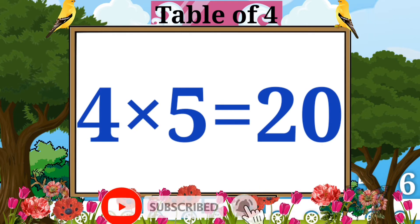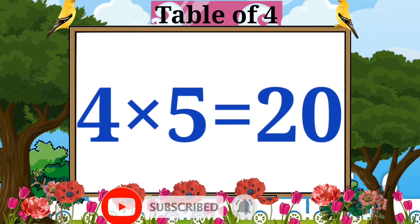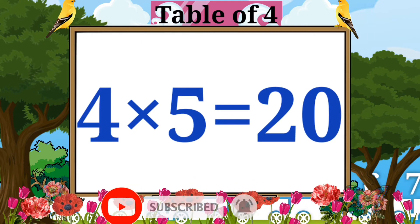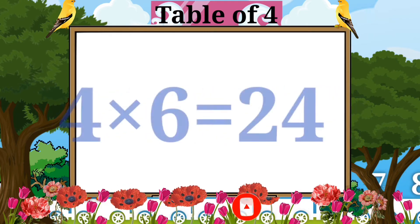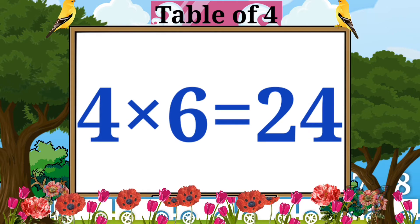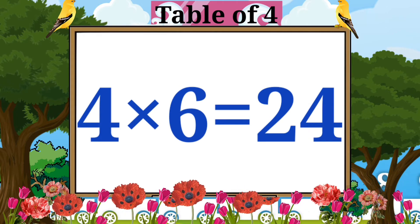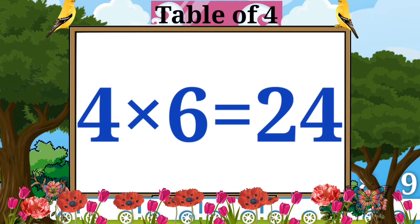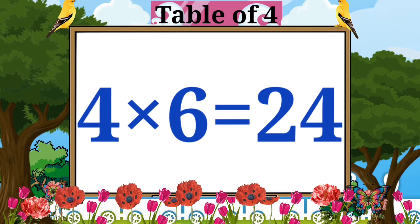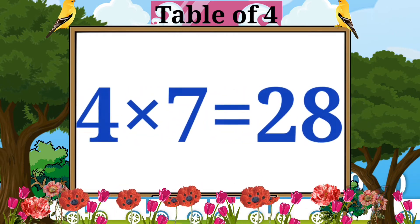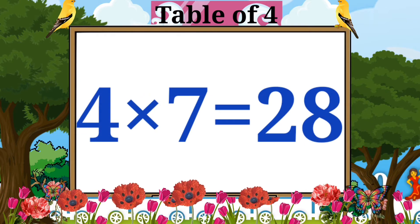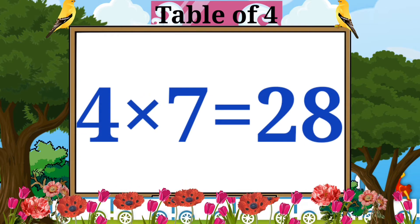Four fives are twenty. Four sixes are twenty-four. Four sevens are twenty-eight.